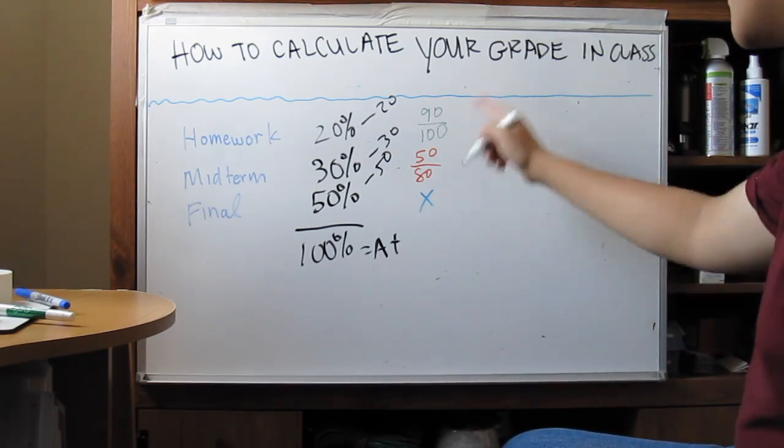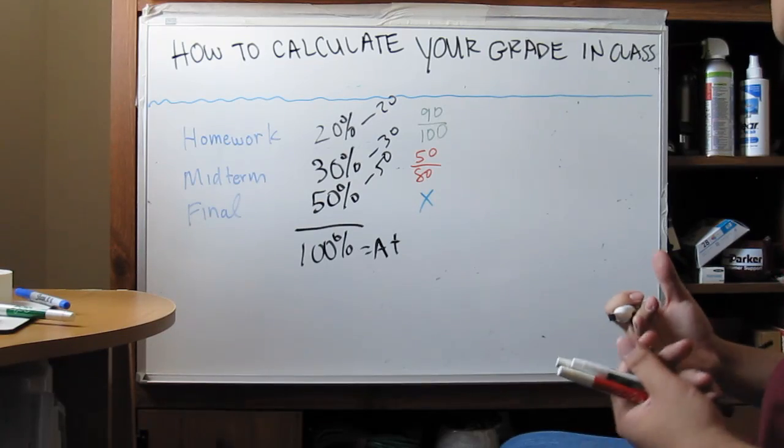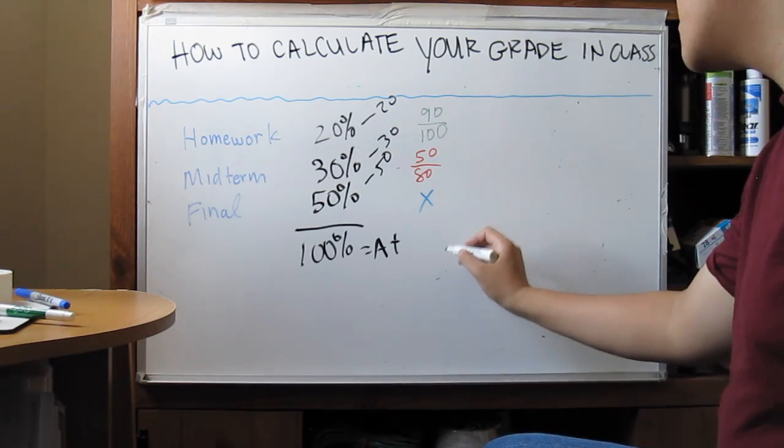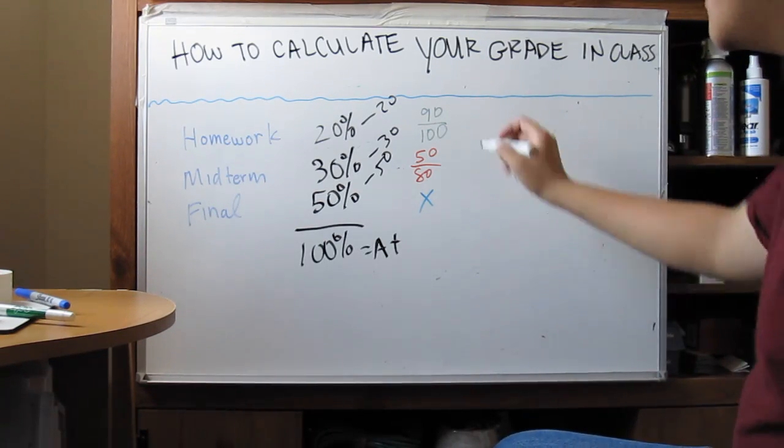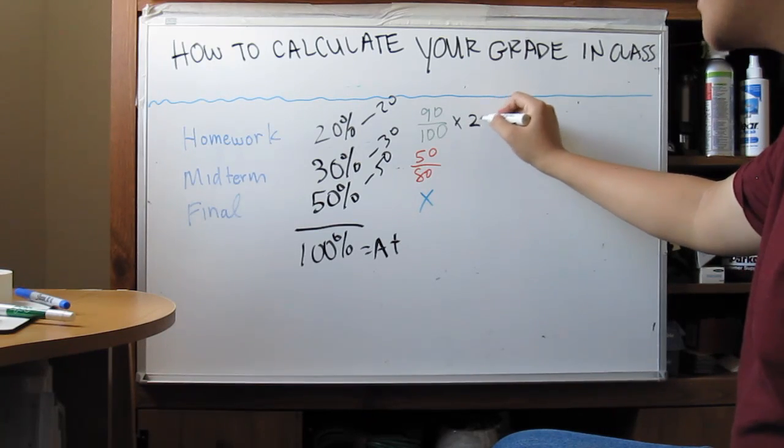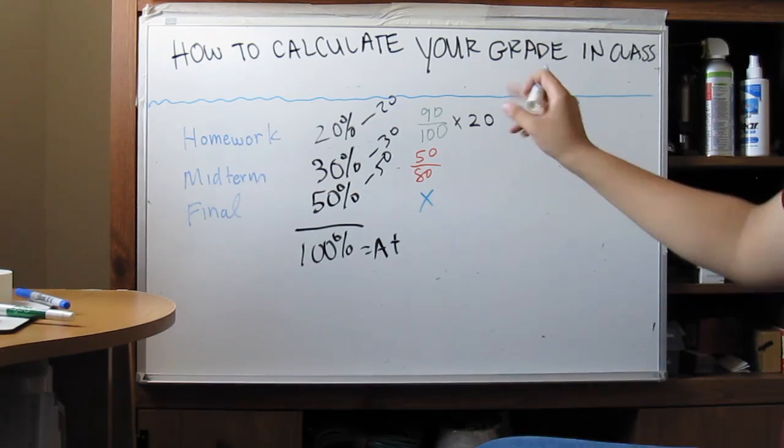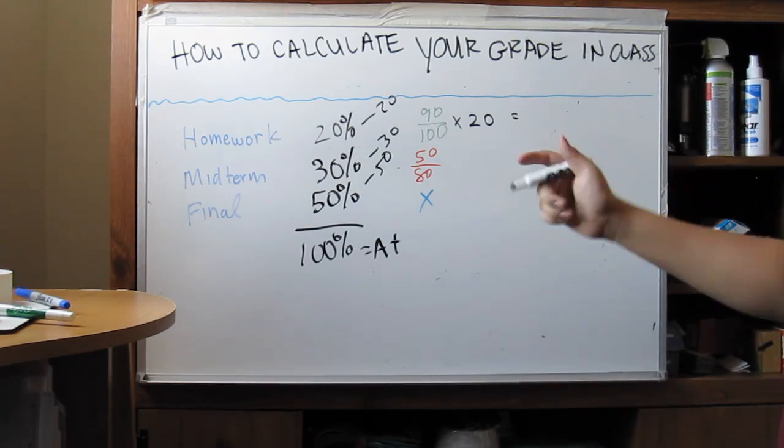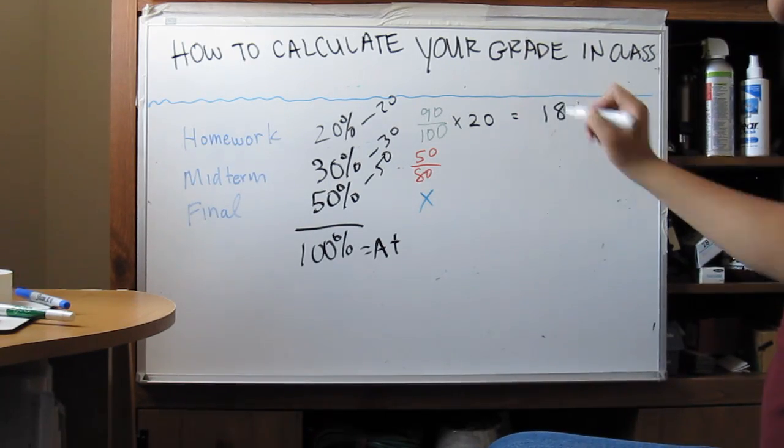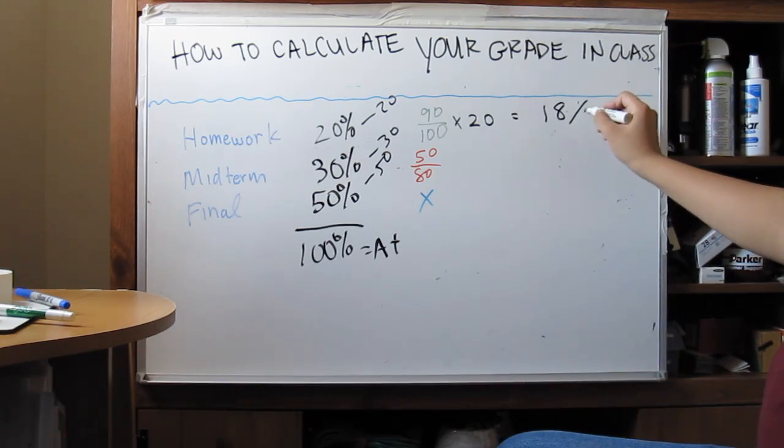So I'm going to take the value, we're going to do a little bit of multiplication. We're going to take 90 over 100, multiply it by 20, and figure out how many points we got. Now this value, 90 over 100 times 20 is equal to 18, so we got 18 points out of a possible 20.